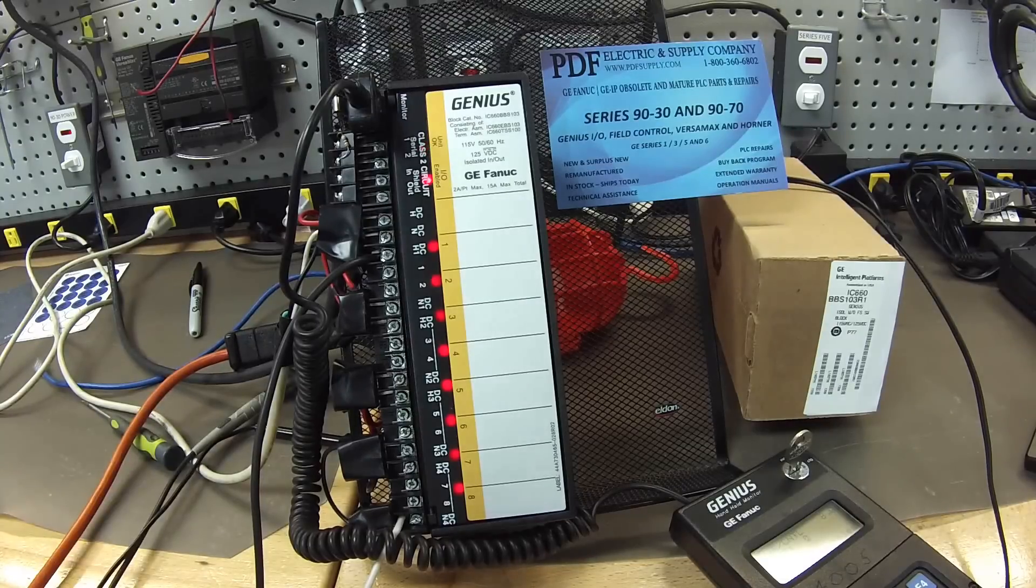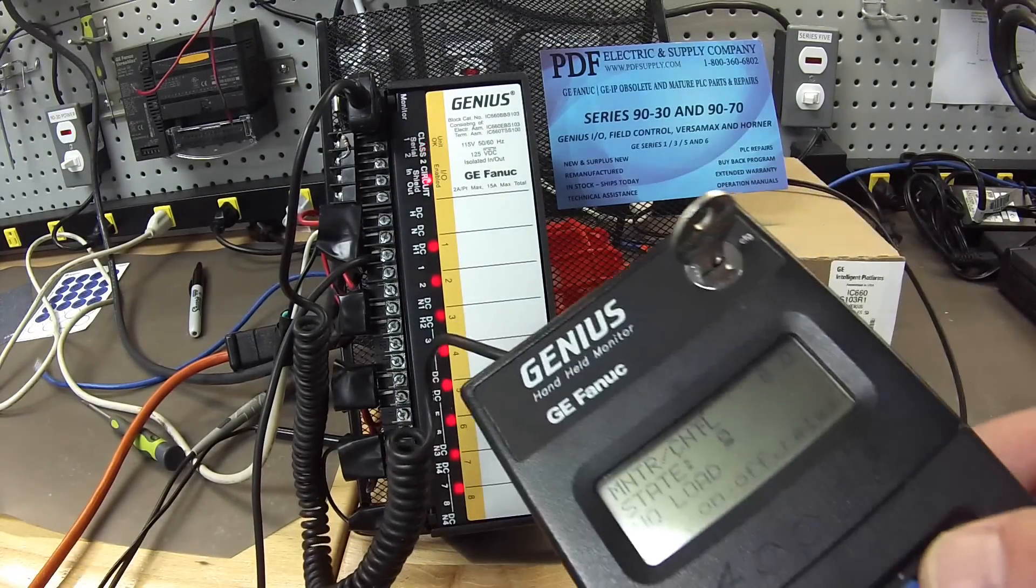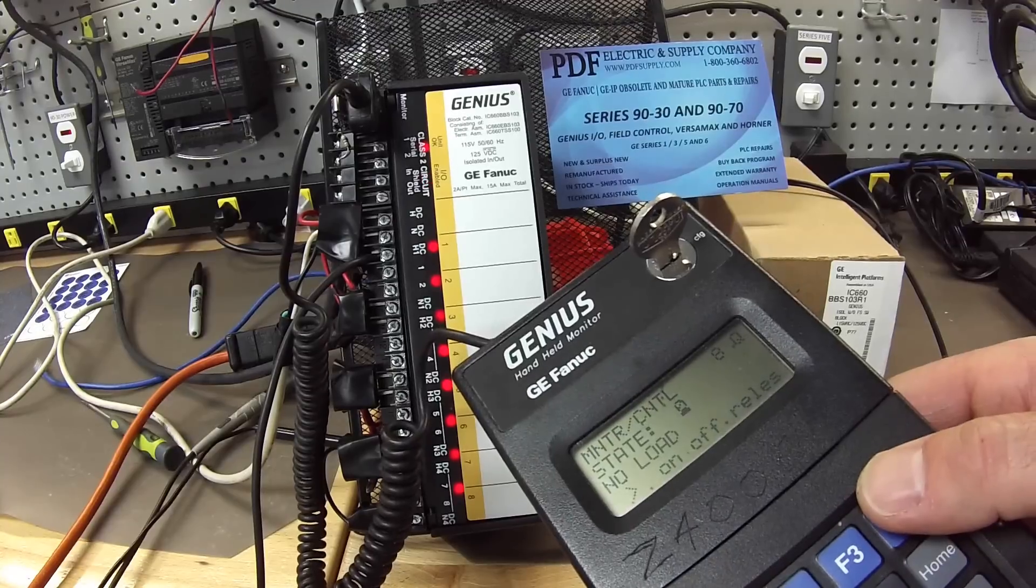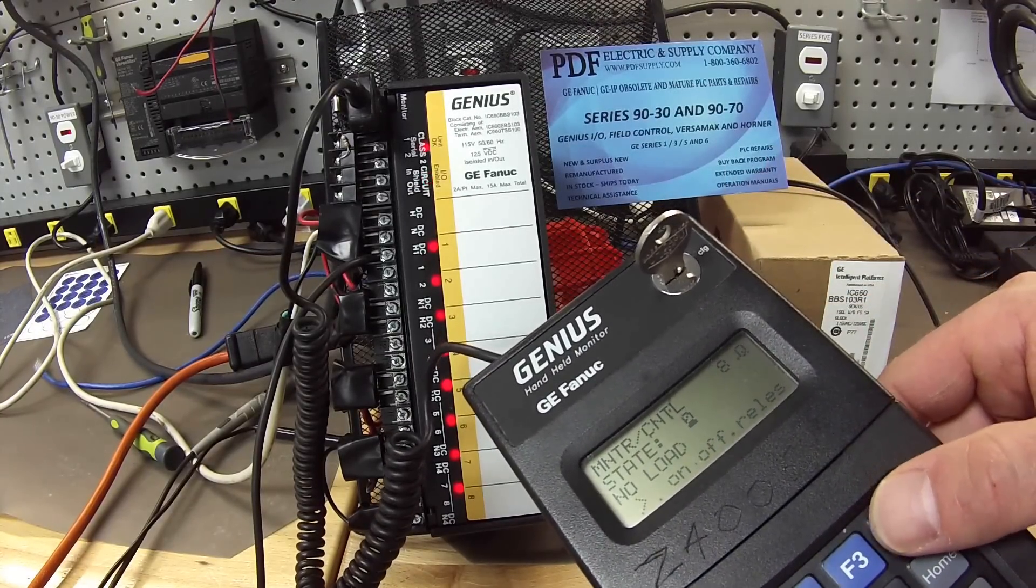That's half the test for the output. The other half is to make sure that nothing is wrong, we want to make sure that when we shut off those outputs that they truly are off.